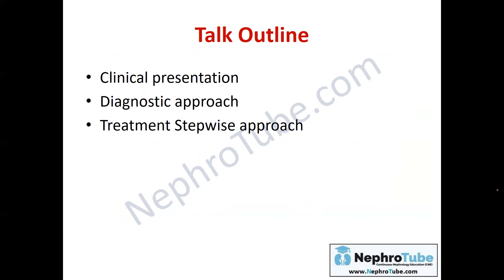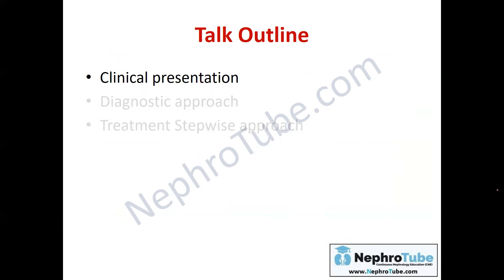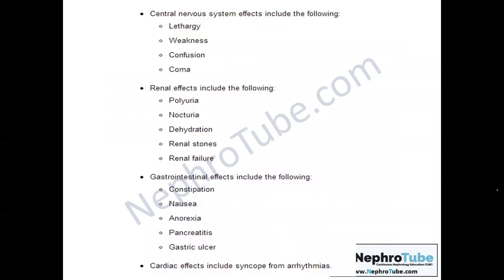Today's lecture is a short one. I will discuss first the clinical presentation of hypercalcemia. Back to physiological principles: hypercalcemia always causes decreased excitability of the nervous system. That is why you will find central nervous system manifestations such as lethargy, weakness, confusion, and coma. Most manifestations of hypercalcemia are not specific, and in most circumstances hypercalcemia is diagnosed by lab measures.